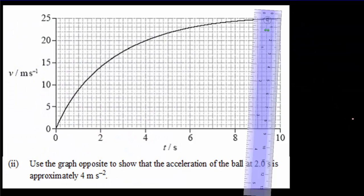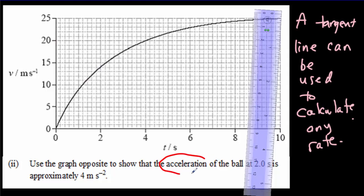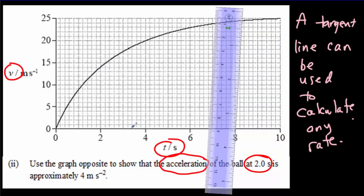Now on a typical IB exam, you're going to be asked to do an estimate using a tangent line at least once per paper. And it's a skill that doesn't just apply to velocity. A tangent line can be used to calculate any rate. So acceleration here is the rate of change of velocity. So if we have a velocity versus time graph and we want to know the acceleration, the rate of change of velocity at a particular time, in this case 2 seconds, then we need to use the tangent line at 2 seconds. So let's do that.